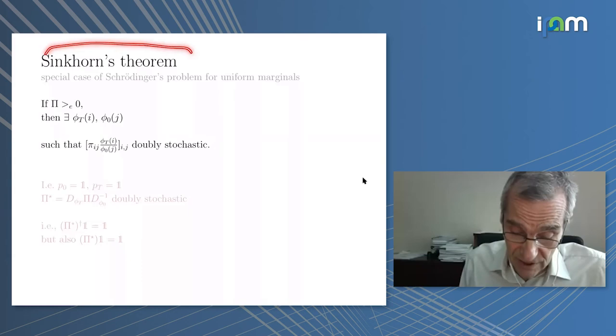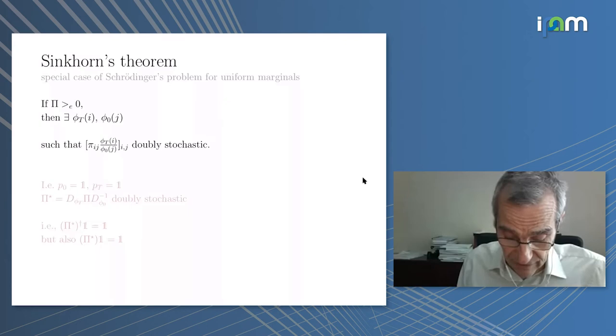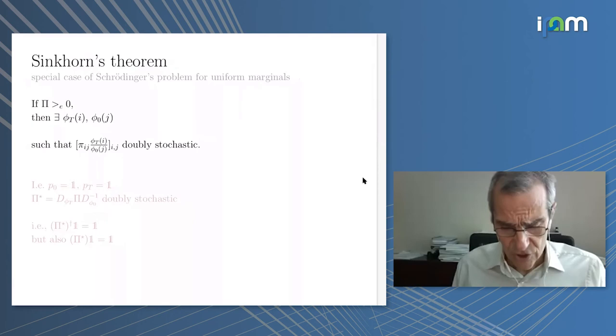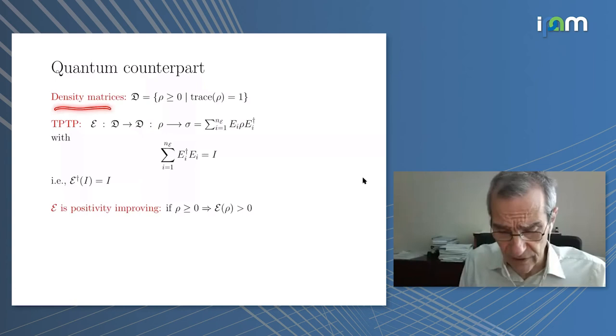Now the celebrated Sinkhorn theorem is a special case where you have uniform marginals. It was discovered much later than Schrödinger but in parallel in statistics.